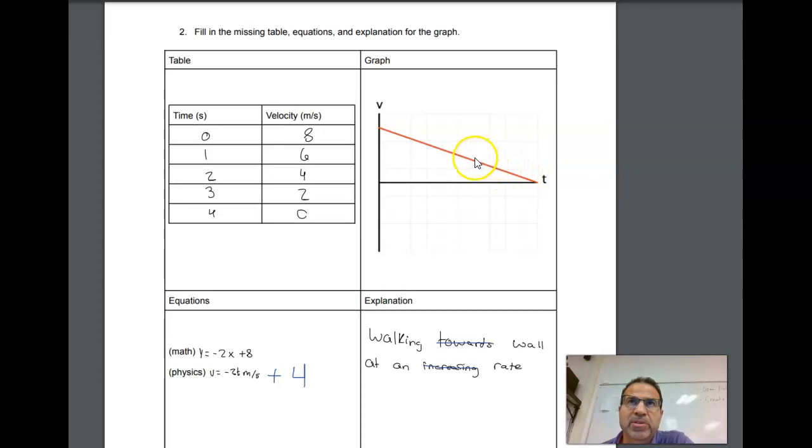that means the position is increasing. At the very beginning, this person is moving very fast at 8 meters per second away from the wall, then 6 meters per second away from the wall, then 4 meters per second, then 2 meters per second. At 4 seconds, they come to a stop.